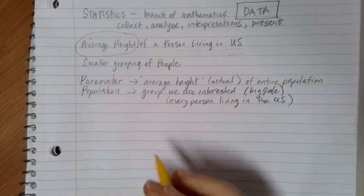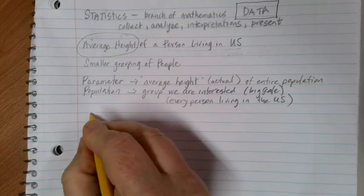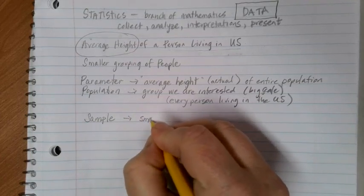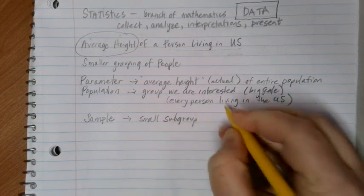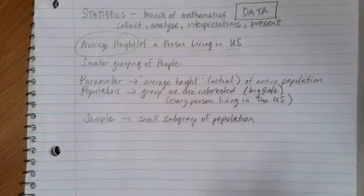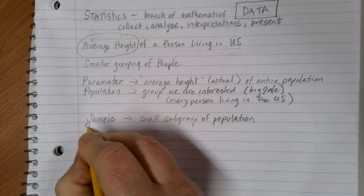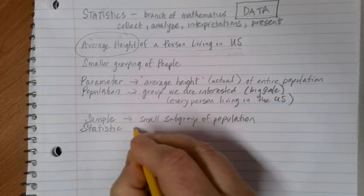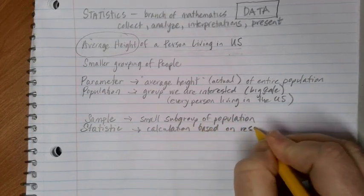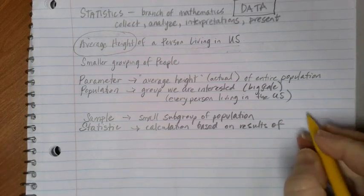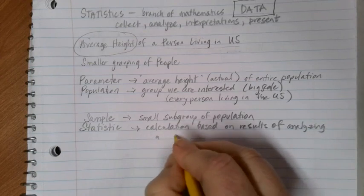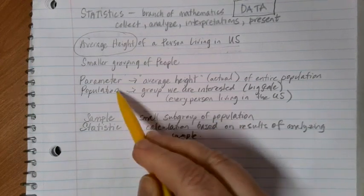Because most of the time talking to an entire population isn't practical, we like to conduct something called a sample instead. For a sample, we're going to pick a smaller, relatively speaking, subgroup of the population and use that to make a prediction. Once I get the sample, I'm going to be able to calculate what I call a statistic — a statistic is just a calculation based on the results of analyzing a sample. So statistics come from samples; parameters come from populations.